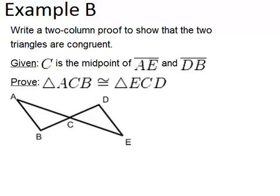In example B it says write a two column proof to show that the two triangles are congruent. We're given that C is the midpoint of AE and DB, and we're trying to prove that the triangles are congruent.